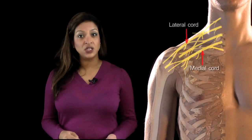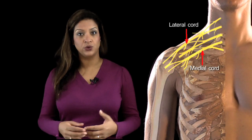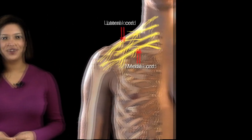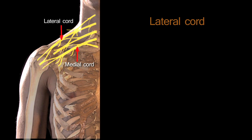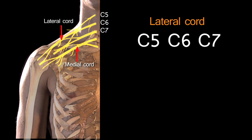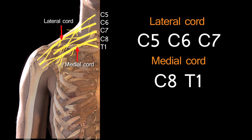The median nerve actually has contributions from both the lateral and the medial cord of the brachial plexus. From the lateral cord it has the nerve root values of C5, C6 and C7. And from the medial cord it has nerve root values C8 and T1. So in fact the median nerve has a contribution from all the nerve root levels.